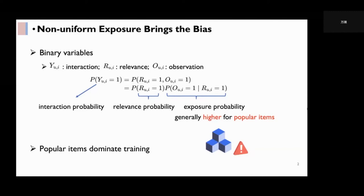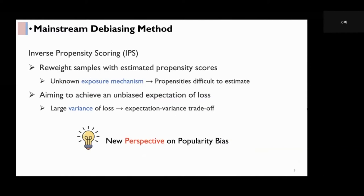One mainstream solution is inverse propensity scoring. IPS reweights the data samples with estimated propensity scores, but since the previous exposure mechanism is unknown, propensities are difficult to estimate. This line of work aims to achieve an unbiased expectation of loss,